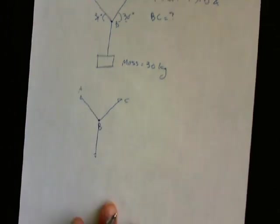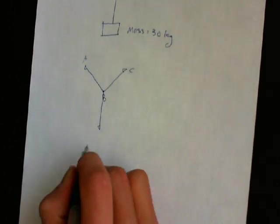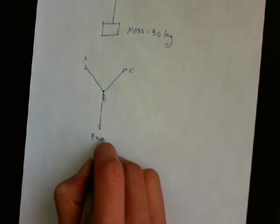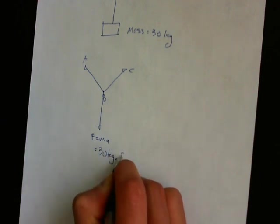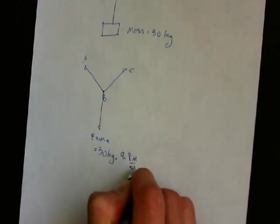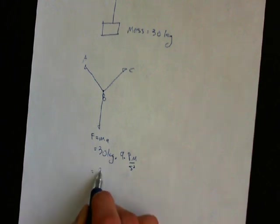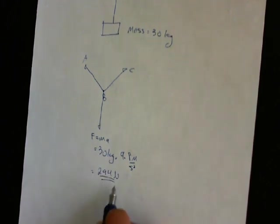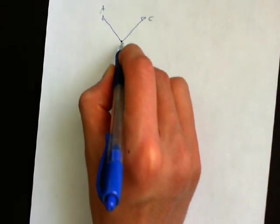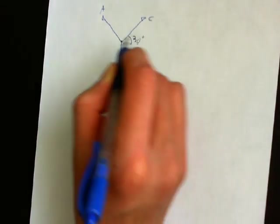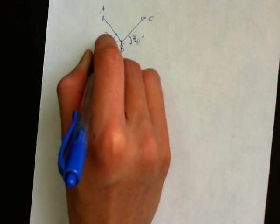And this is the force due to the weight of this box. F equals MA, so it's equal to 30 kilograms times 9.8 meters per second squared, which equals 294 newtons. And the angle is 30 degrees.